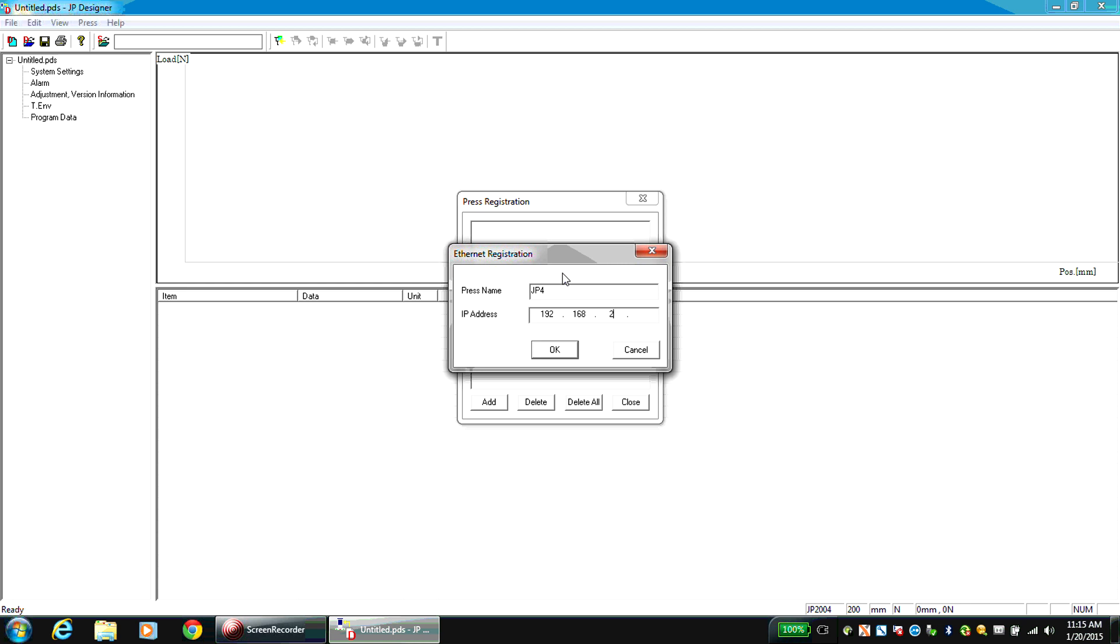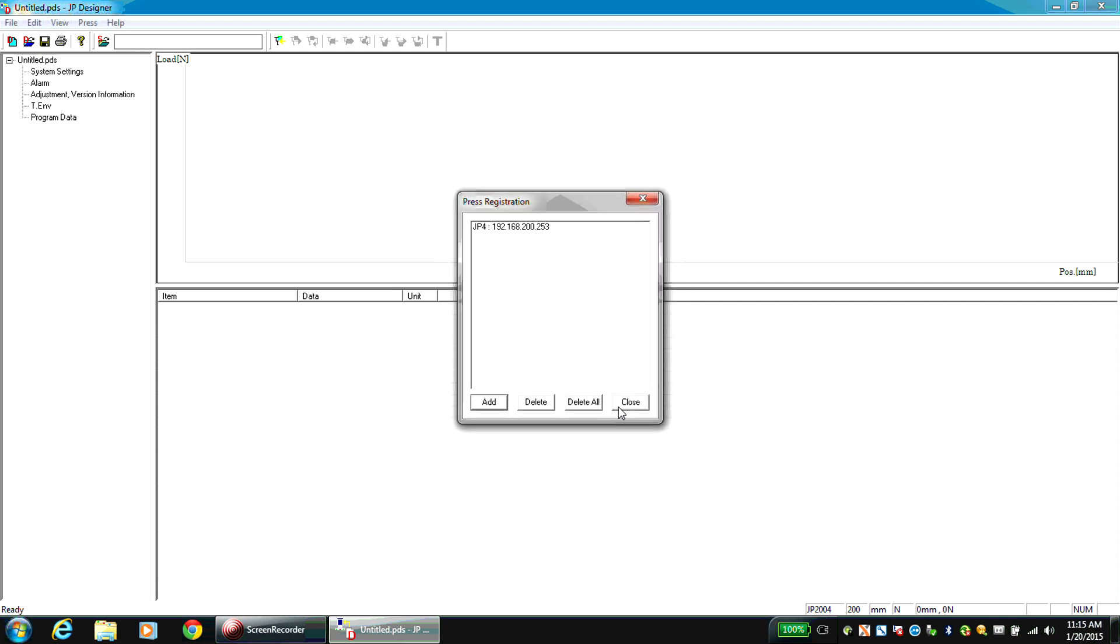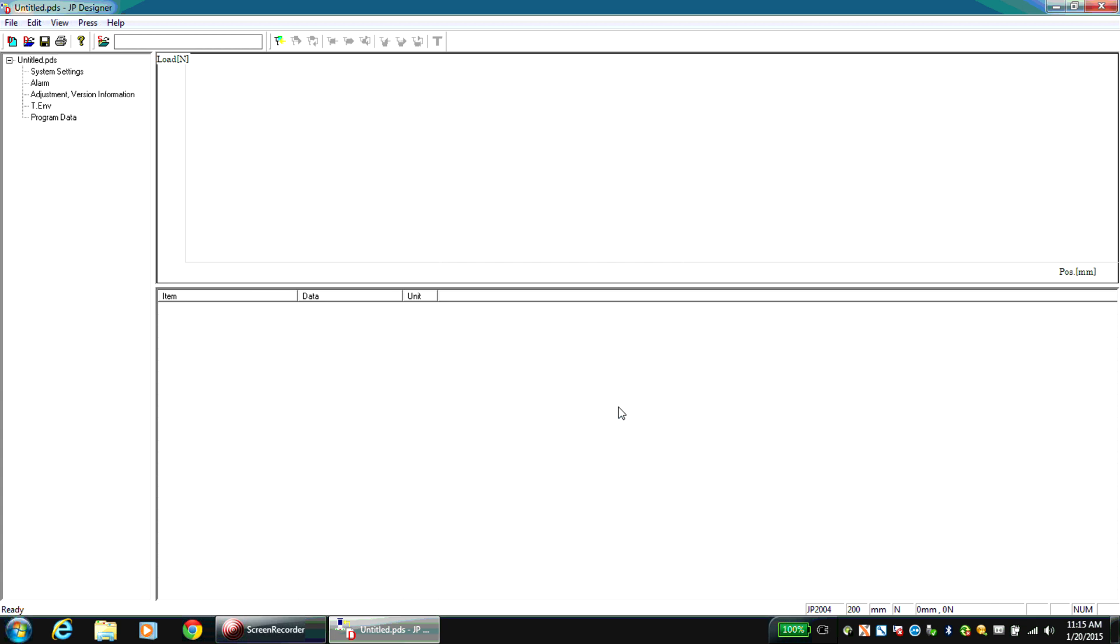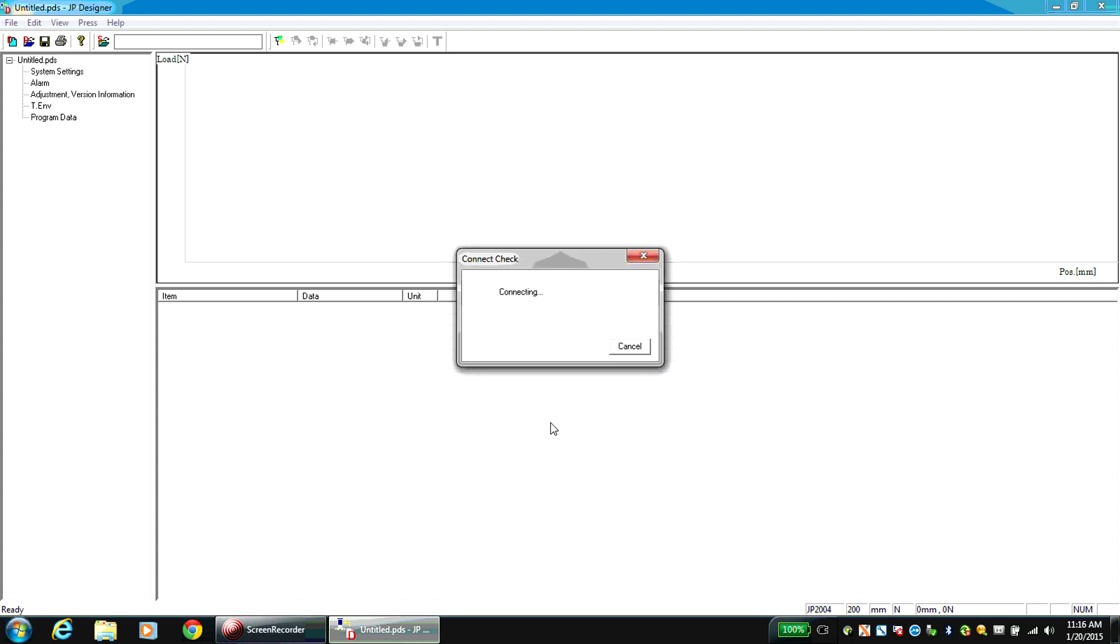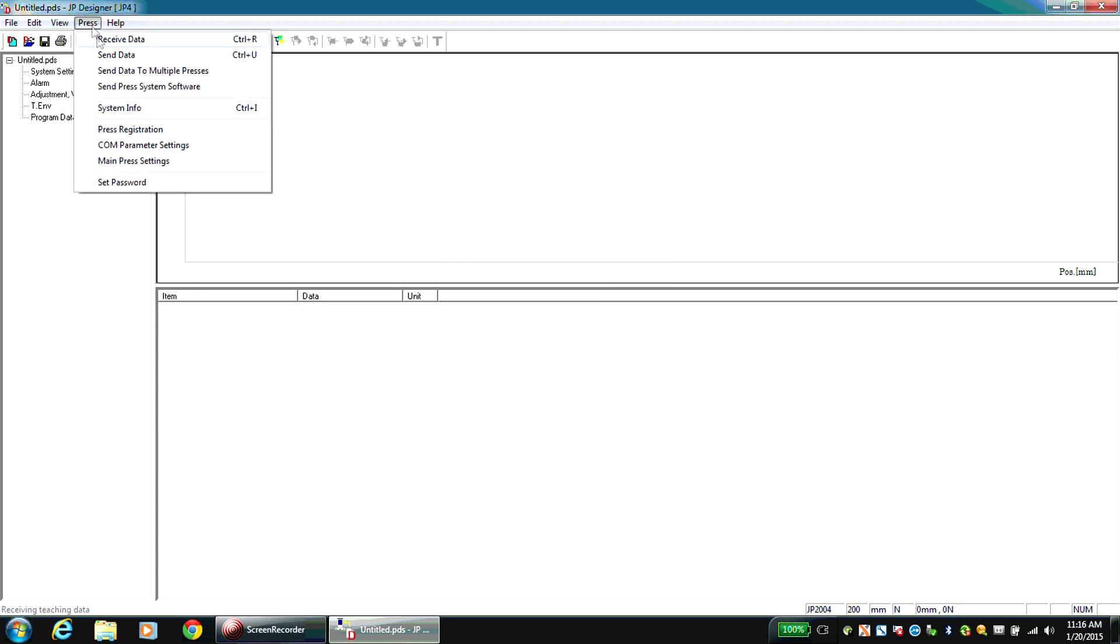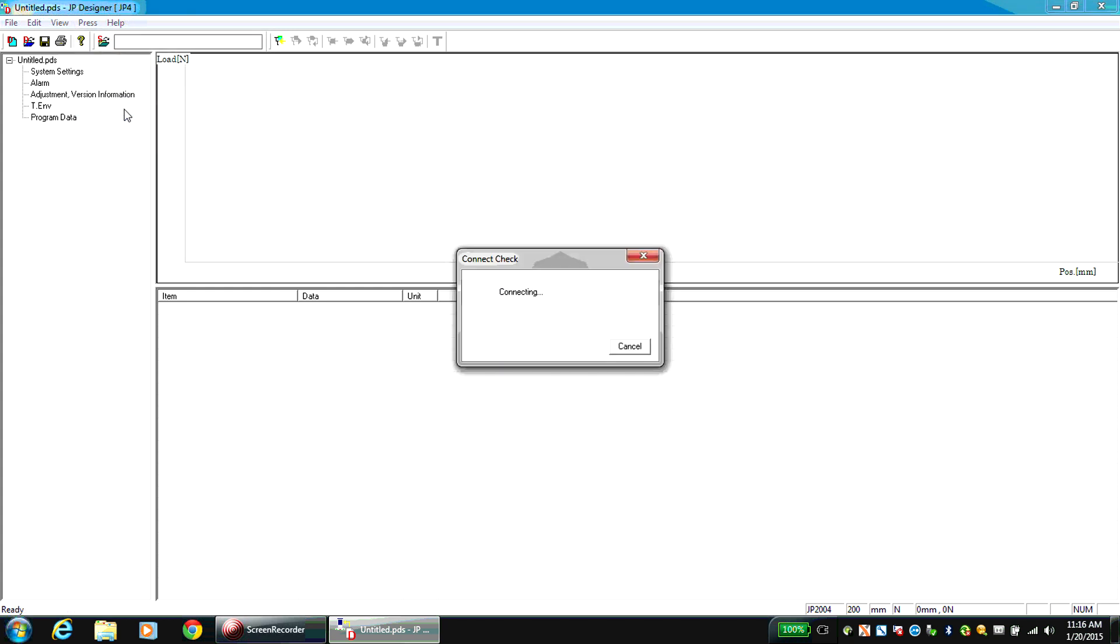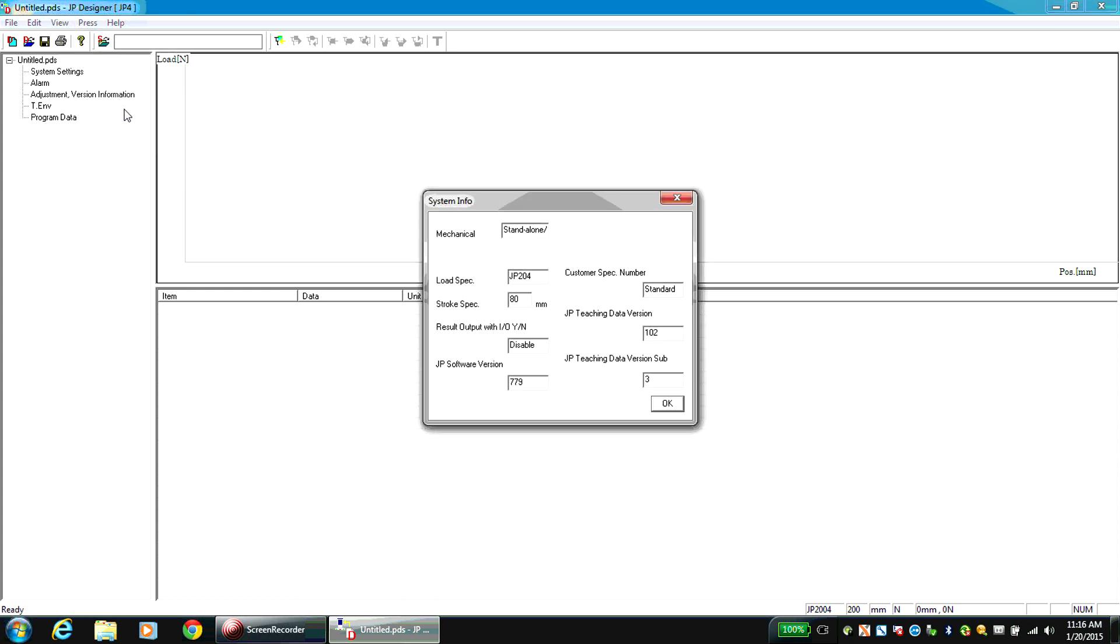With the ElectroPress IP address, the press can be registered in JP Designer. Click OK, close, and the registration is complete. Multiple presses may be registered, so a main press must be set. To do this, select Main Press Settings from the Press drop-down menu. Select a registered press as the main press. To check the communication, click System Info from the Press menu. This window indicates successful communication between the press and PC.